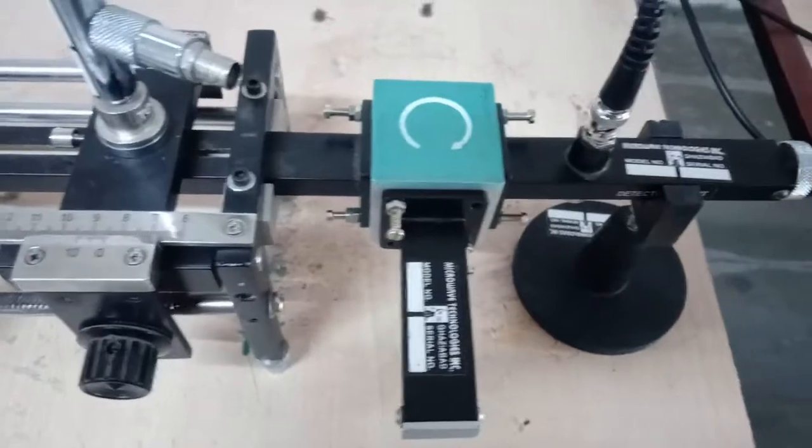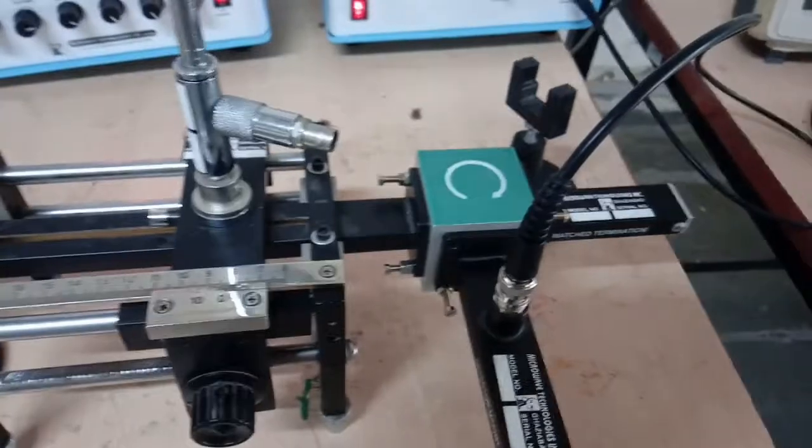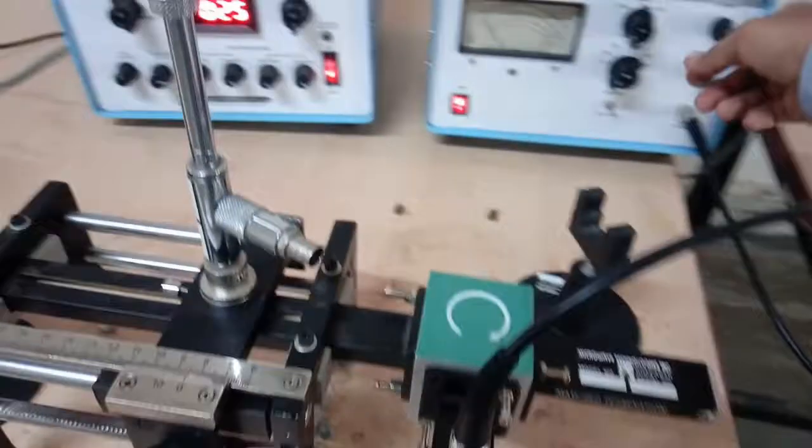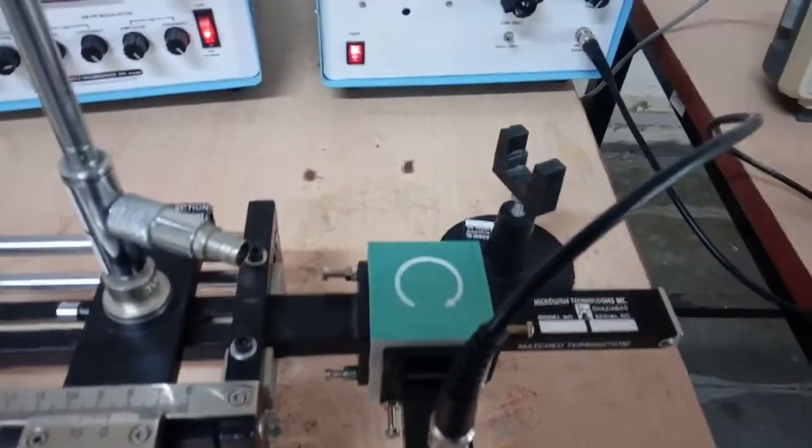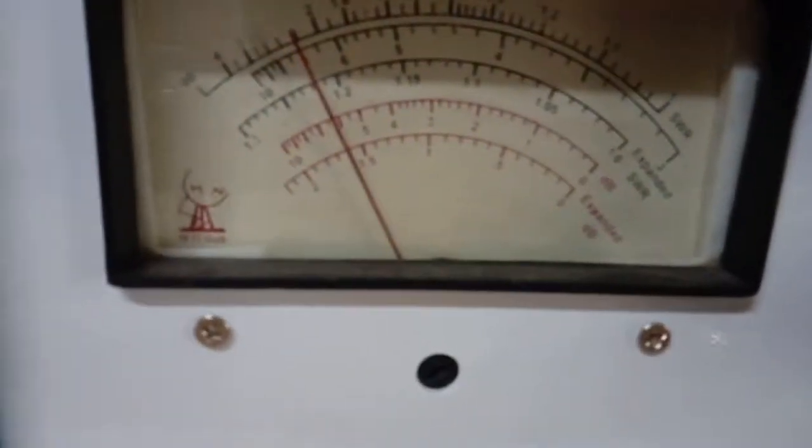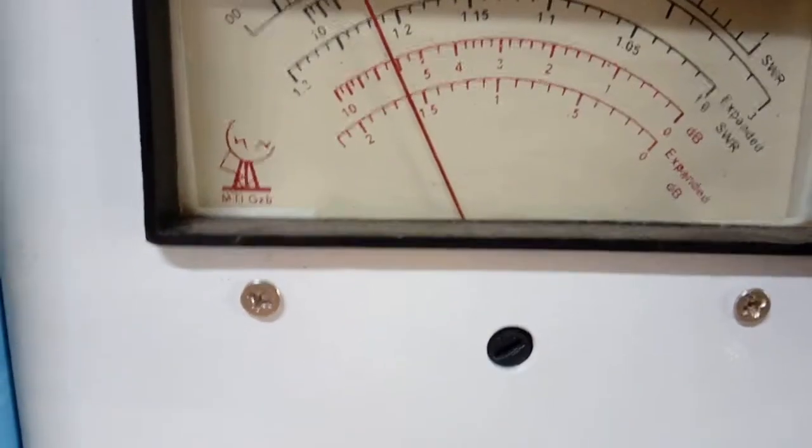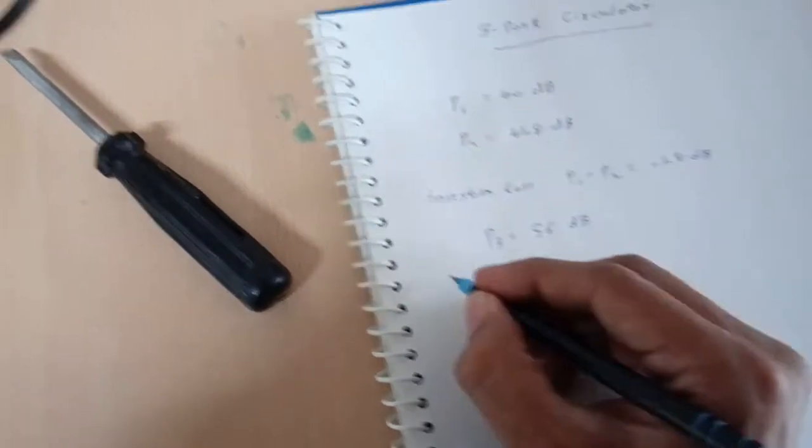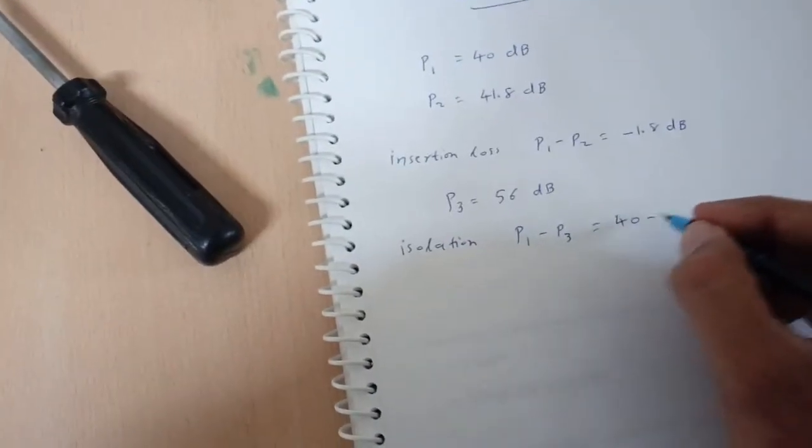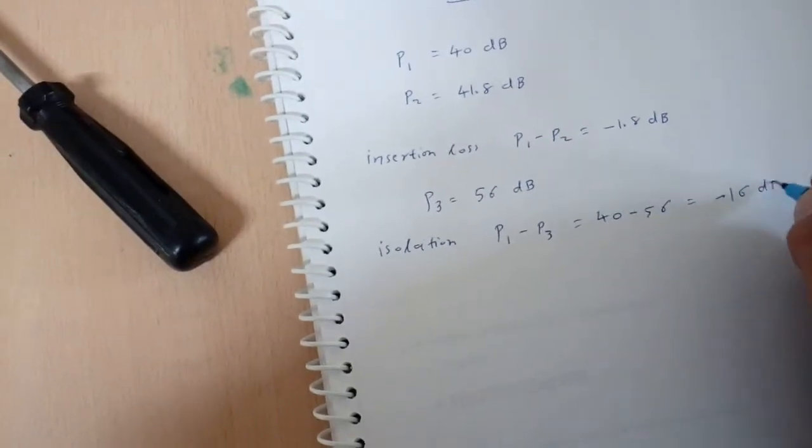So let us make the connection. I have connected port 3 with the detector mount and port 2 is connected with match termination. Now we will verify the dB scale. You can see I have to increase the range of dB switch. It displays 6 in the red scale and the dB switch is at 50, it is at 56 dB. So at port 3 you have got 56. So isolation can be given by P1 minus P3 that is 40 minus 56, that is minus 16 dB of isolation we are getting.